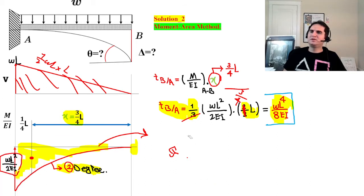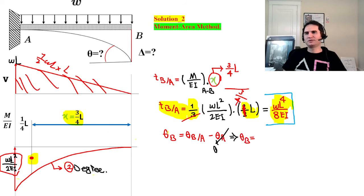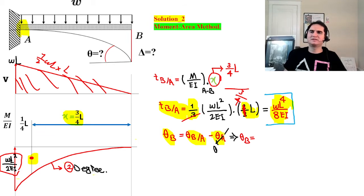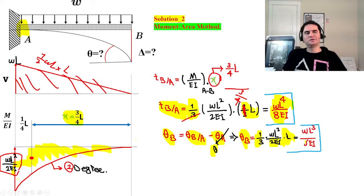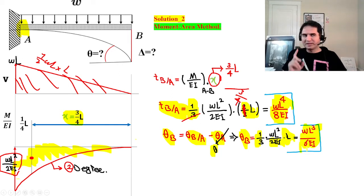For theta at B using the moment area first theorem: theta_B equals theta_B minus theta_A. Since this is a fixed end, theta_A equals zero. So theta_B equals the area under M/EI, which is 1/3 times WL²/2EI times L, giving WL³/6EI - the same parametric value as the previous method.